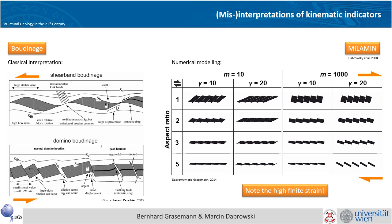The next family of structures I want to show you is boudinage. There are seminal papers by Van Goscombe and Passchier measuring thousands of natural examples, dividing boudinage into two big groups: shear band boudinage, where the boudins are separated by synthetic slip surfaces of a shear band, and domino boudinage, where the slip surfaces between the boudins are at a very high angle — and if the domino is deformable, they might form A-type flanking folds.